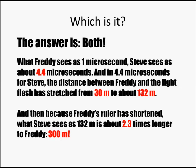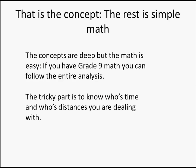And Freddy's ruler is shortened, so that what looks to Steve like 132 meters looks like it's 2.3 times as long to Freddy, and that works out exactly to the 300 meters. Once you have the concepts, working out what the actual time and length differences are is just a matter of some simple math, math that is well within your capabilities. No fancy calculus or other advanced stuff. The secret is just to write down expressions for what is happening with a very clear idea of whose length and whose time we are dealing with.